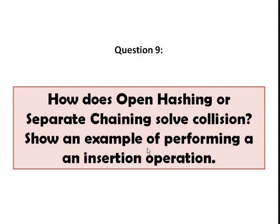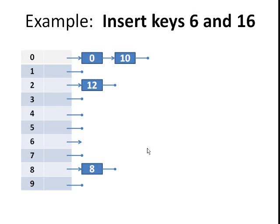Number nine, how does open hashing or separate chaining solve collision? Show an example of performing an insertion operation. Open hashing or separate chaining solves collision by keeping a list of all elements that hash to the same value. For example, if we insert keys 6 and 16 in our hash table using chaining.